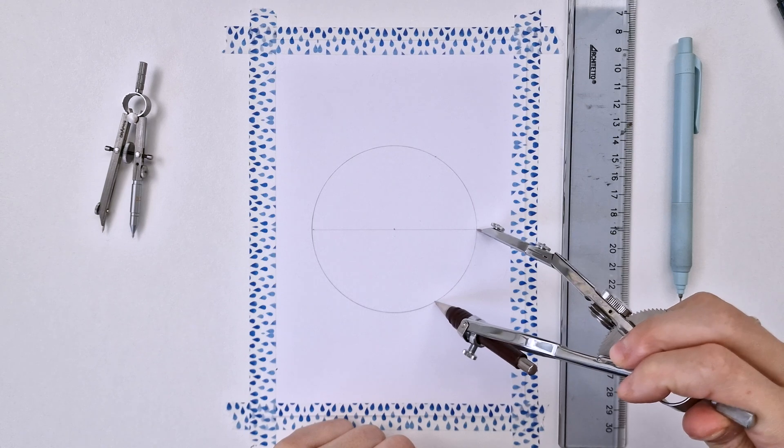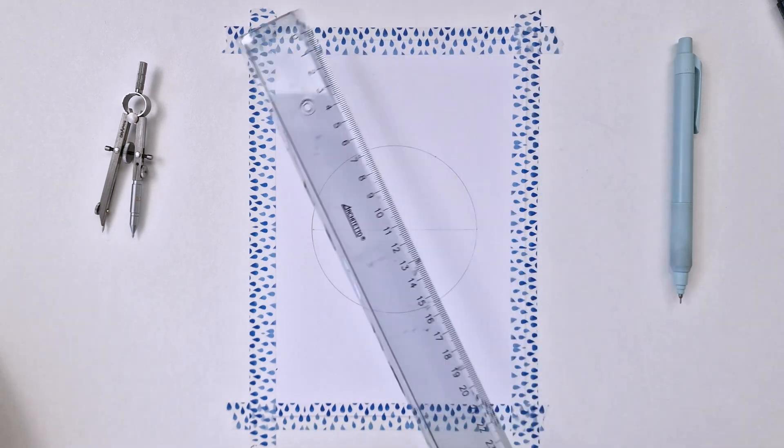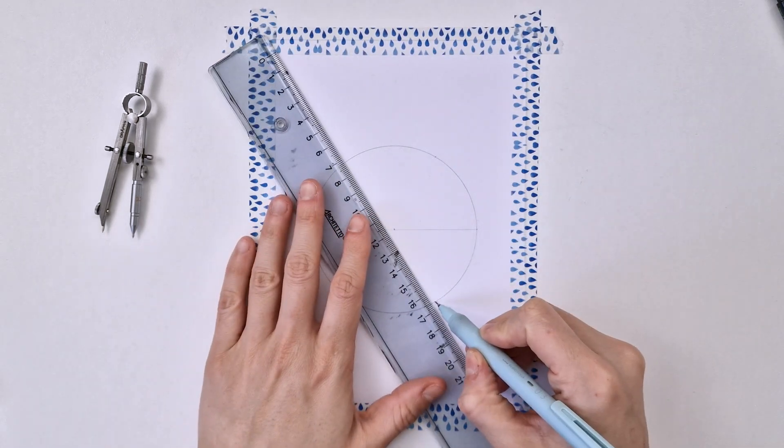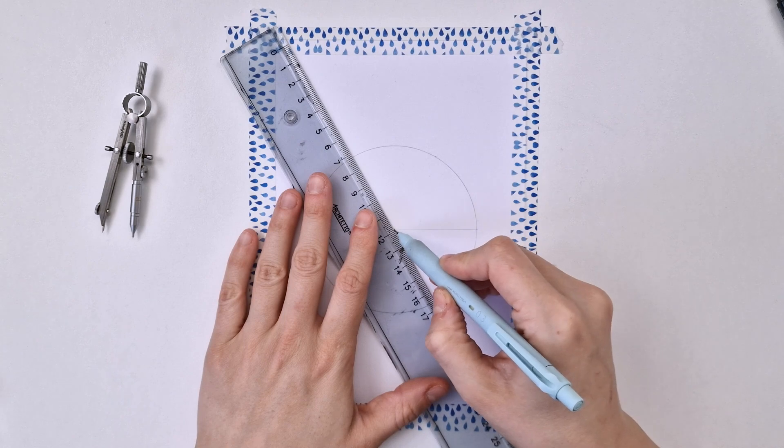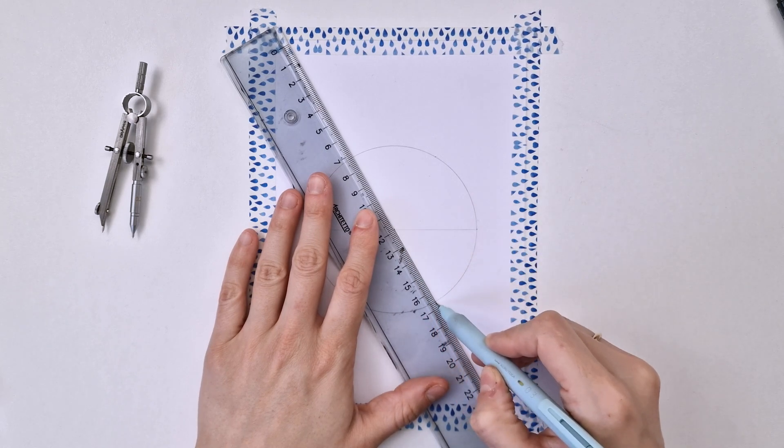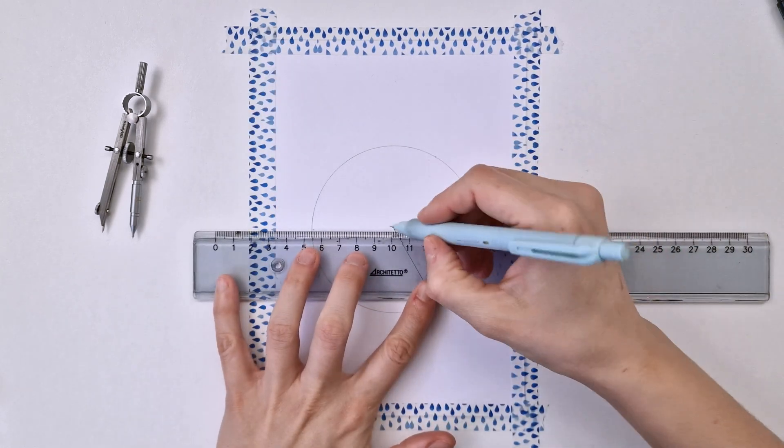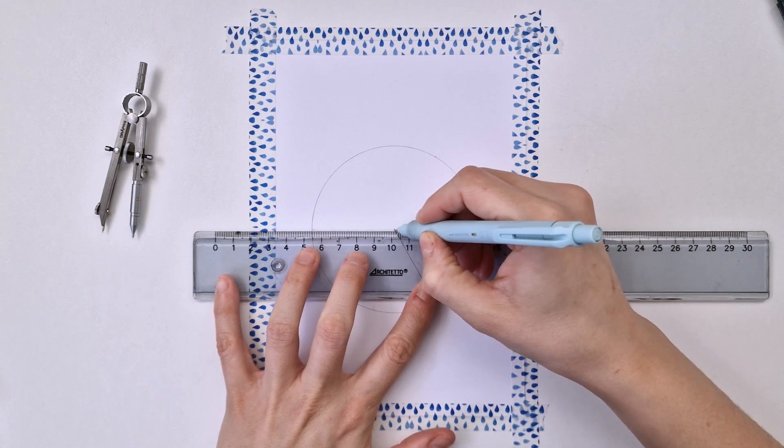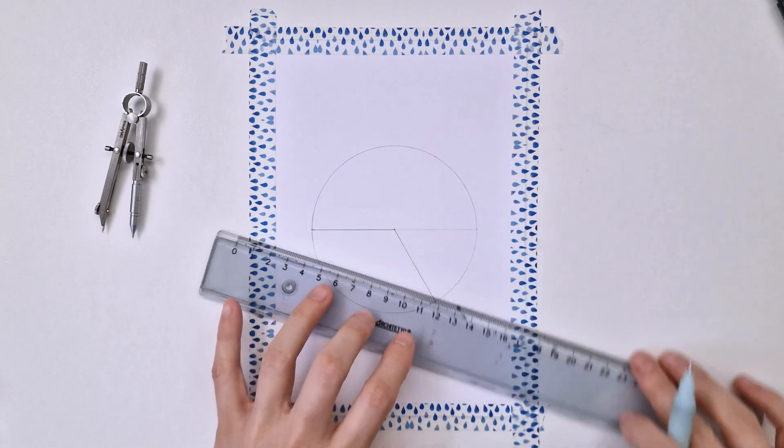And then I'm connecting these points to the center of the circle as well as half of the horizontal line. As you can see here, I'm drawing it very bold so you can see it clearly.